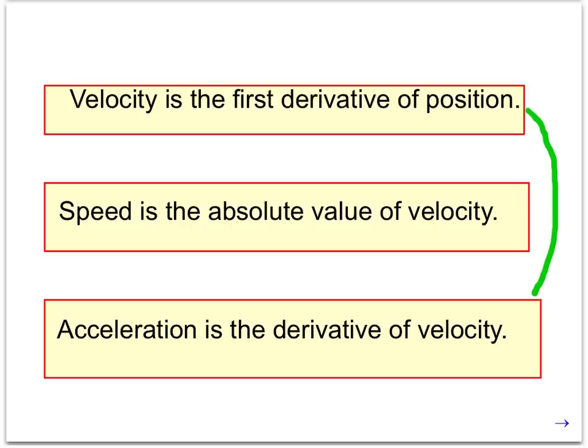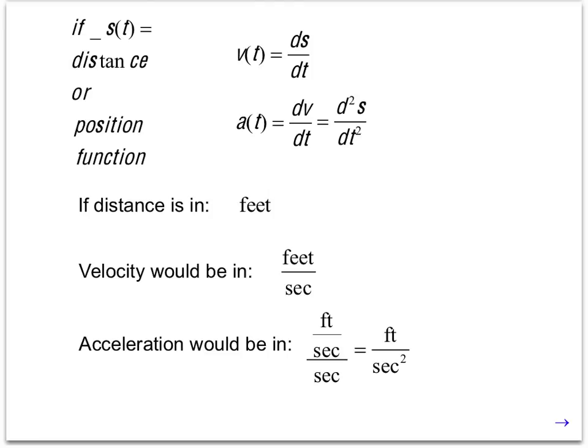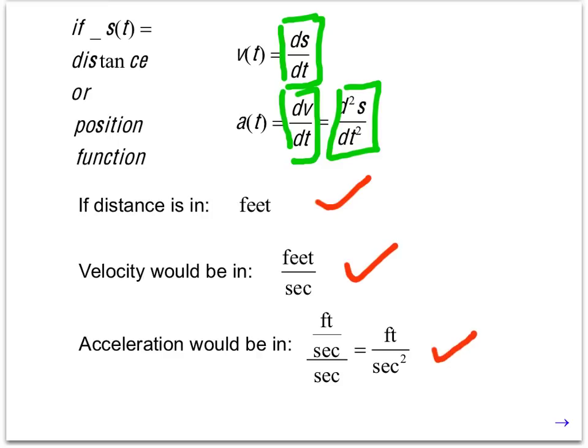Acceleration is the derivative of velocity. So, if you put those ideas together, you realize, oh, if I derive something twice, a distance function twice, that will give me acceleration. So, we also call this the second derivative. So, from a notation standpoint, if we let s of t, or sometimes it's called x of t, be a distance or position or displacement function, then the velocity is the derivative of that function, which we write as ds dt. Again, s being the distance function. The acceleration is the derivative of velocity, which means it's the second derivative of distance. So, those are the relationships you need to be aware of that are applied to physics. From a unit standpoint, if distance is in feet, then velocity would be in feet per second, and acceleration would be in feet per second per second, which we abbreviate feet per second squared.